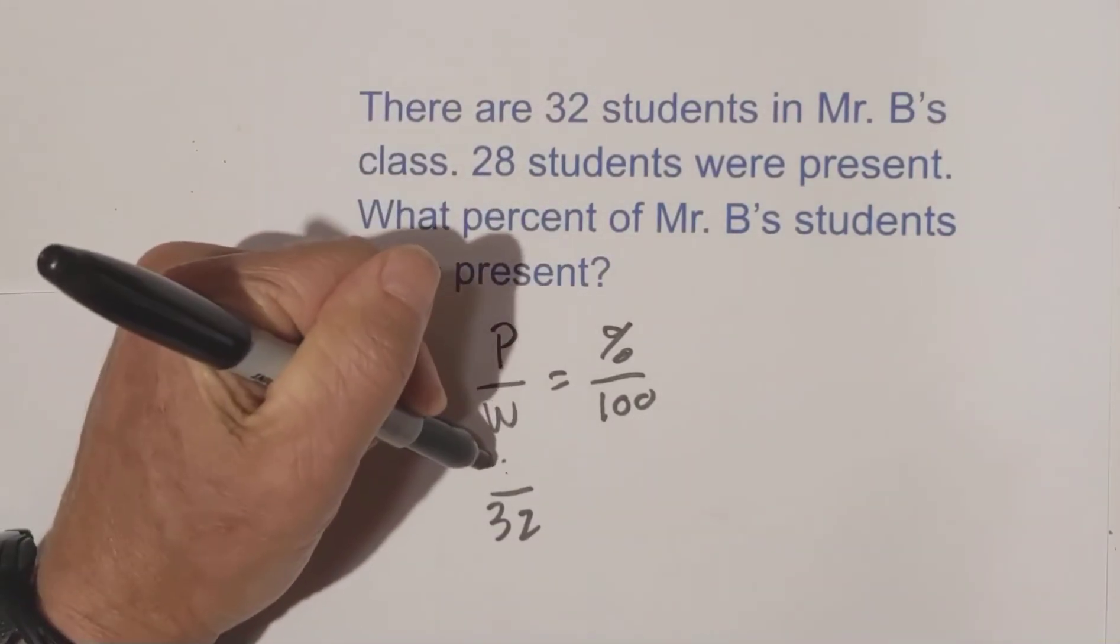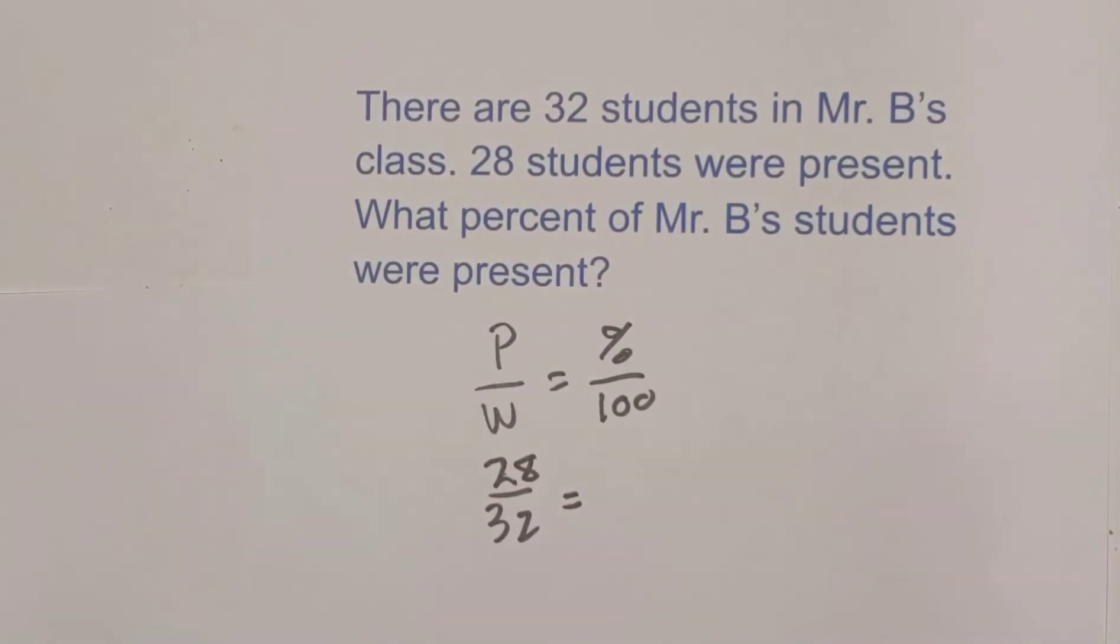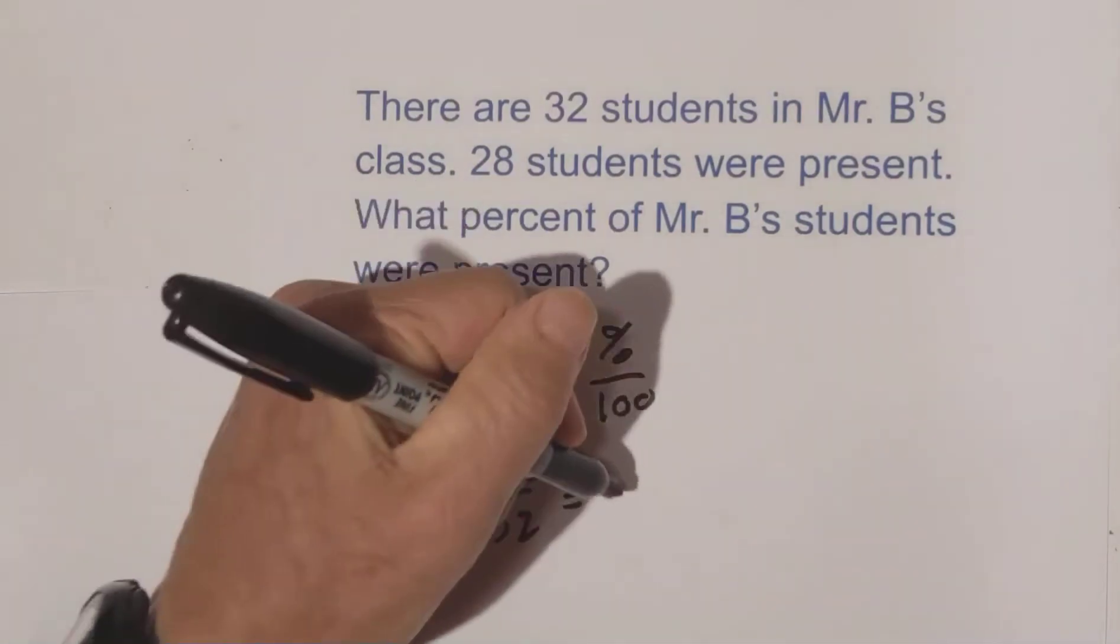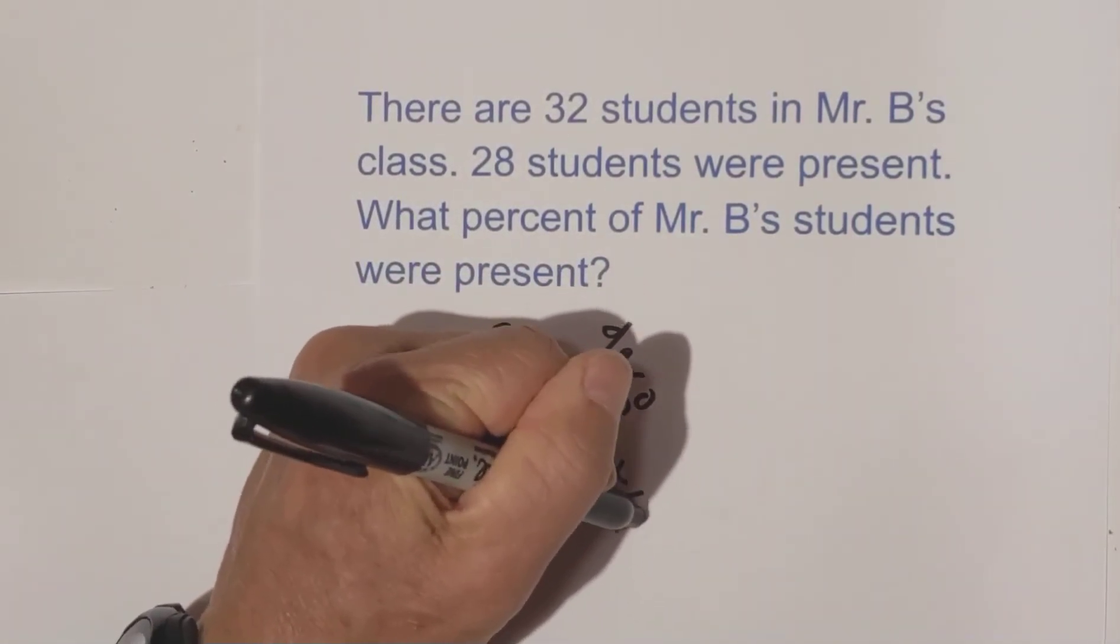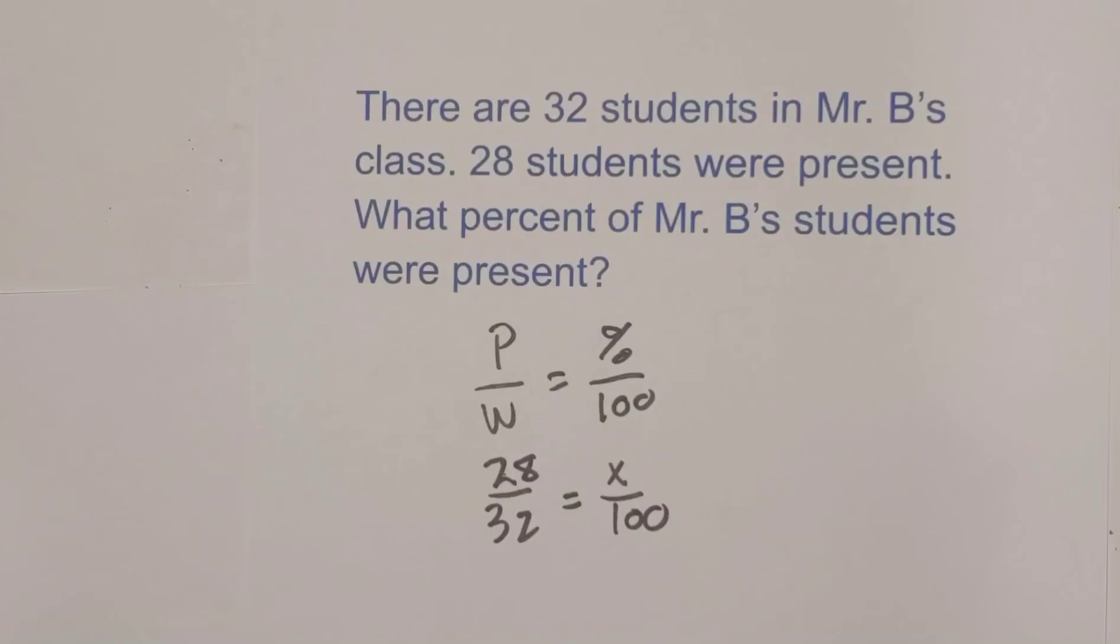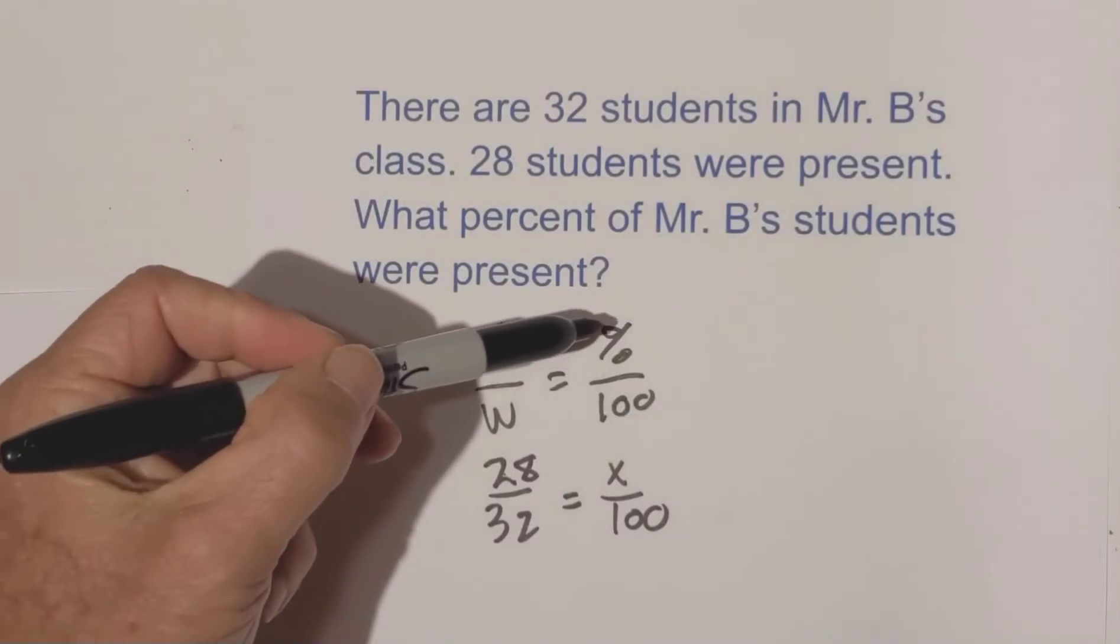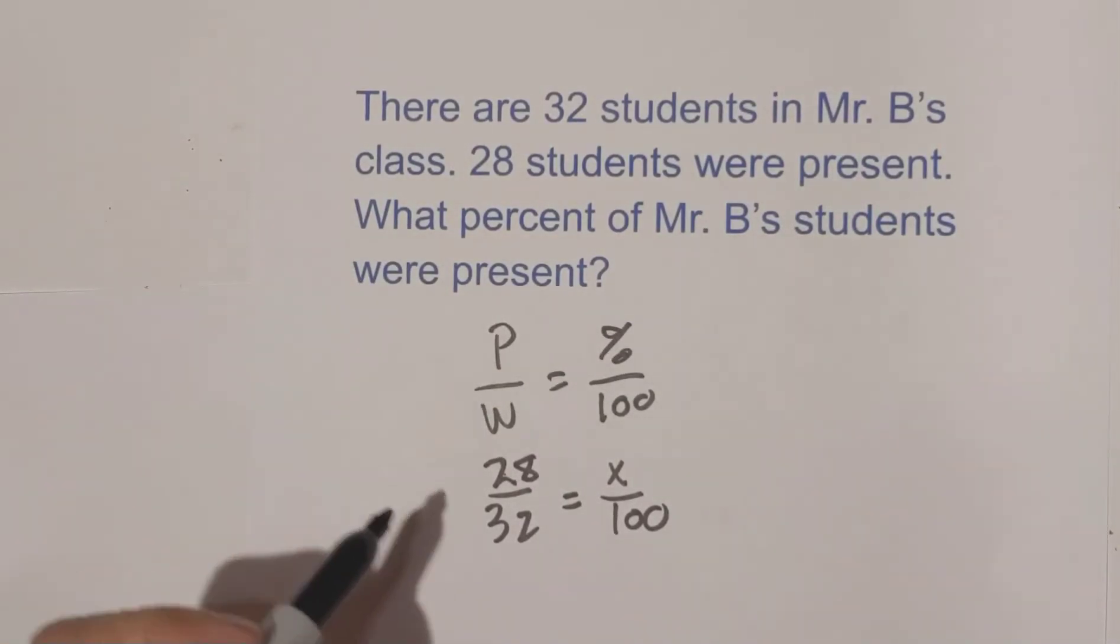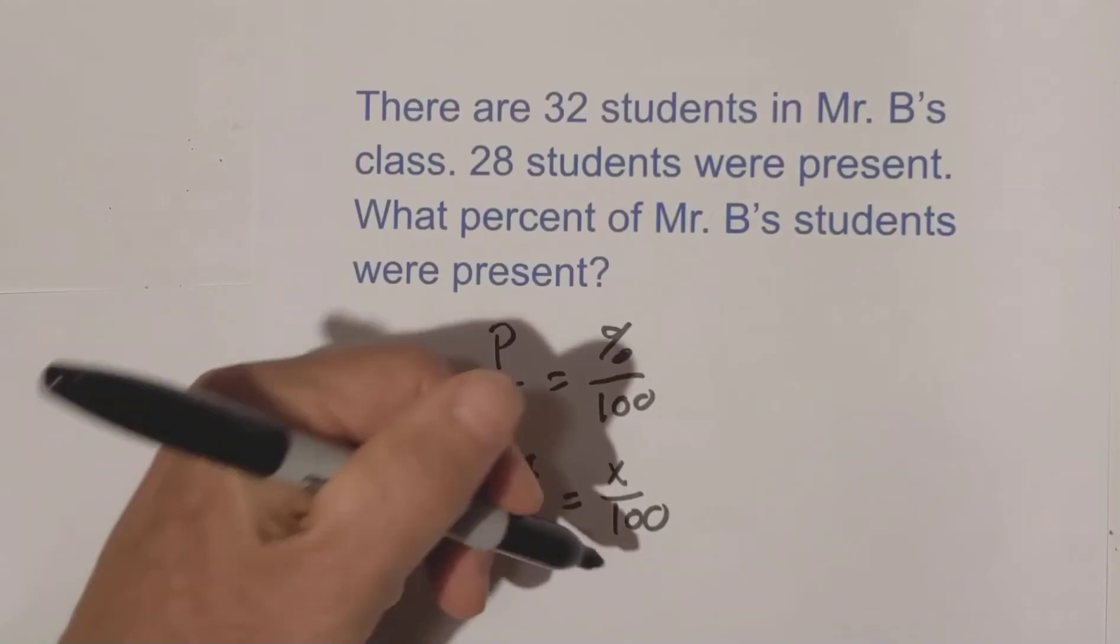And there's 28 present and that's the part. Well, we're looking for the percent. So that's going to be x and then we're going to place it over 100. So we've used part over whole equals percent over 100. And so now all we do is we do a cross multiply.